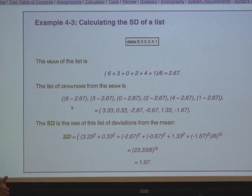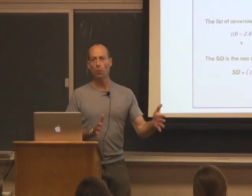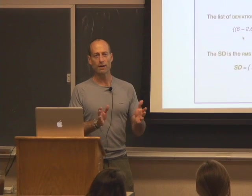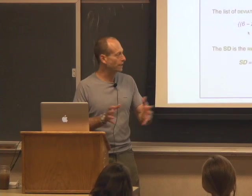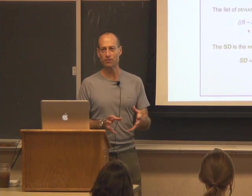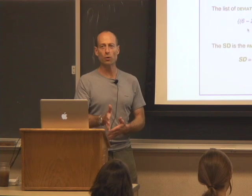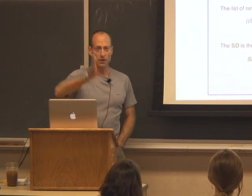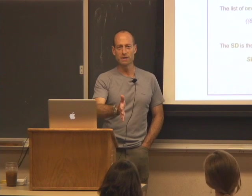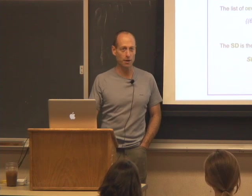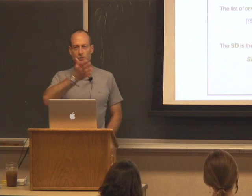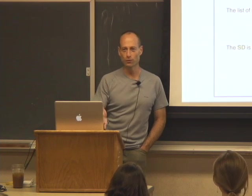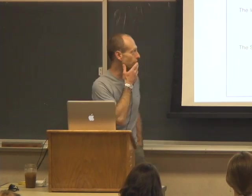The SD gives an idea of how far away elements of the list are from the mean on average, where distance is measured by squared differences. We're looking at the square root of the average squared distance from the mean. If all numbers are equal, they all equal the mean; subtract the mean from each and you get a list of zeros; the RMS of zeros is zero. So if all the numbers are equal, the SD is zero.